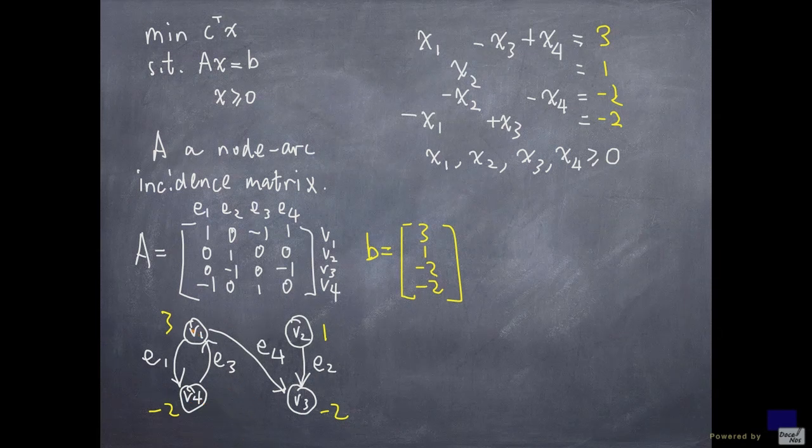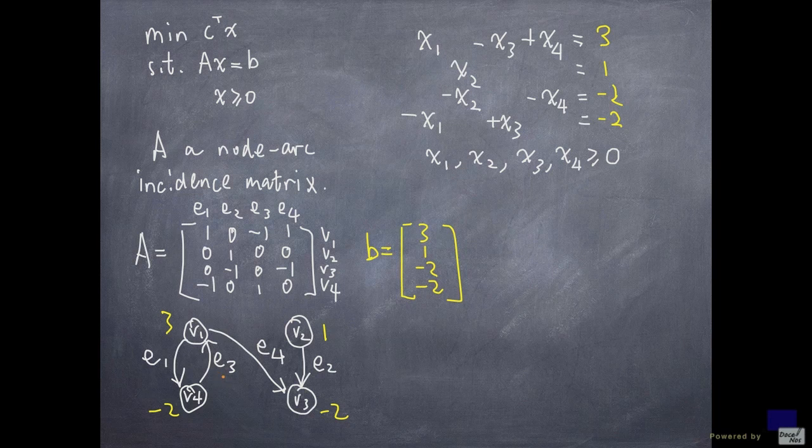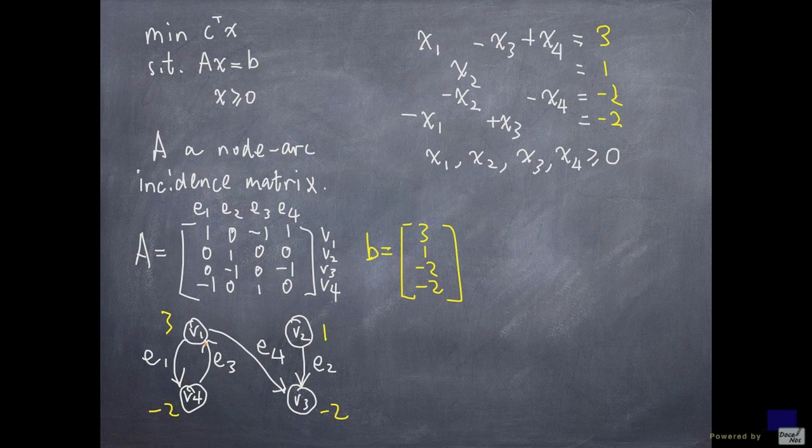So what I want is things coming out of e1 and e4, subtracting the things coming into v1 through e3 to be 3. And for v4, if I put 1 on e3, I better have 3 on e1 because I want the net amount coming out to be negative 2. That means I want 2 more units coming in than going out.